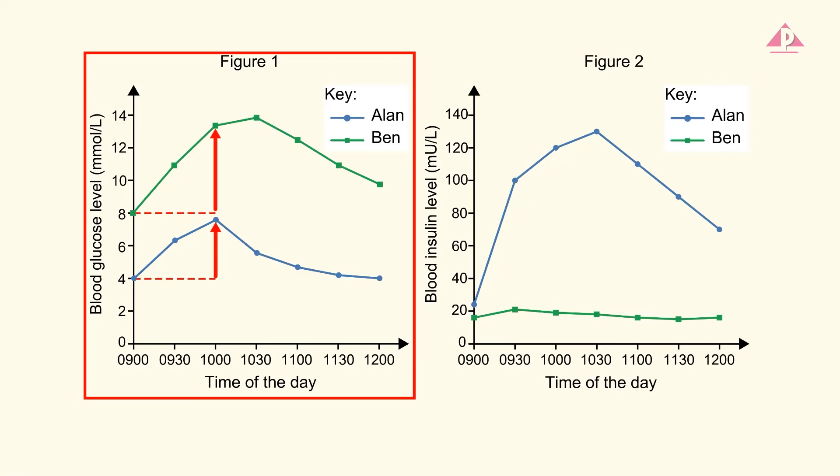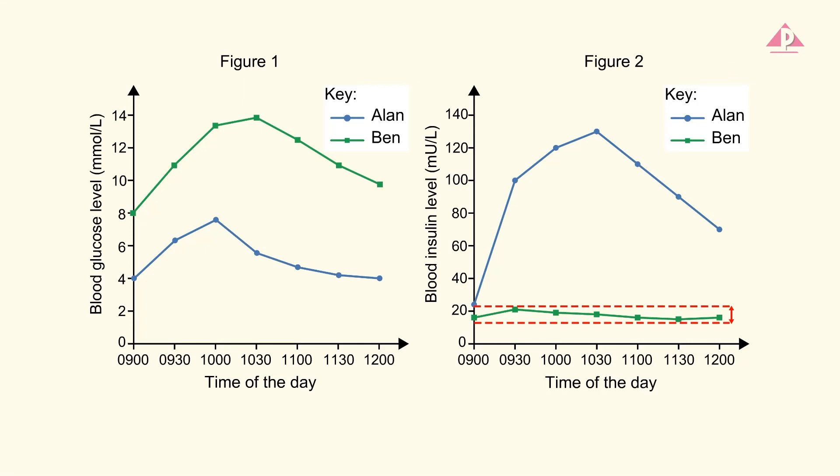Ben's body should have responded by producing more insulin. His blood insulin should have reached a level similar to Alan's, if not even higher. However, figure 2 shows that Ben's blood insulin level was lower than Alan's and only showed little change. This means Ben failed to produce the normal amount of insulin that a healthy person can produce.